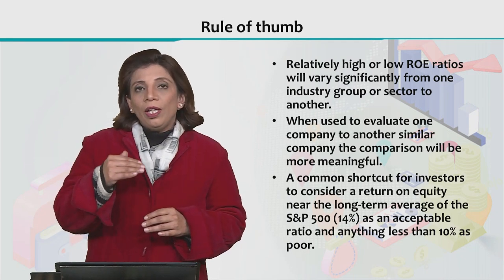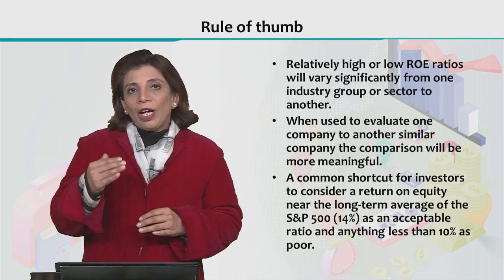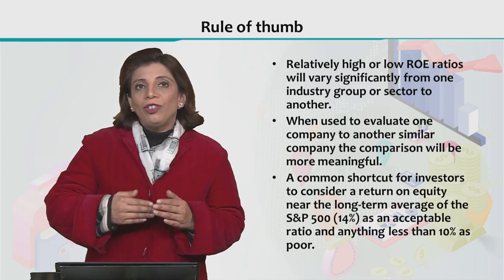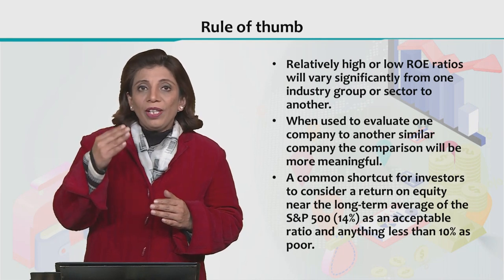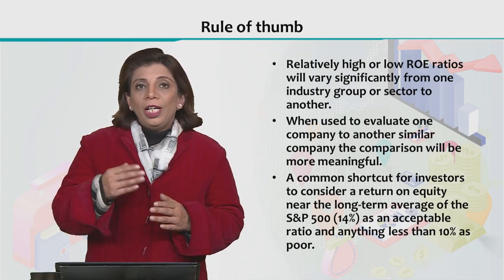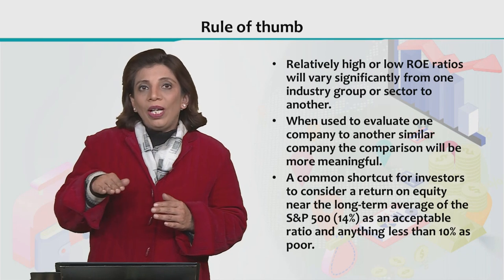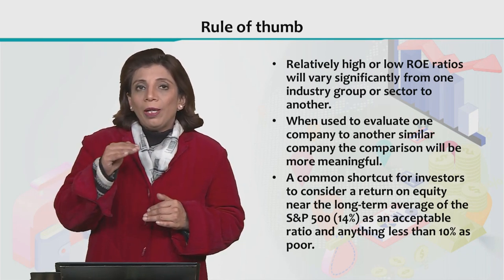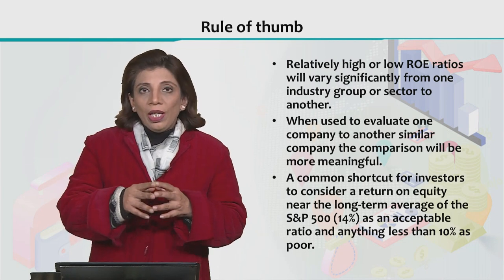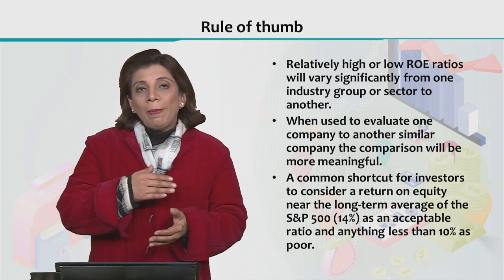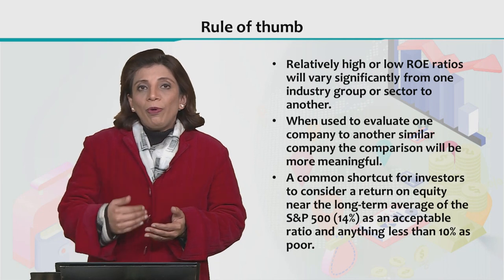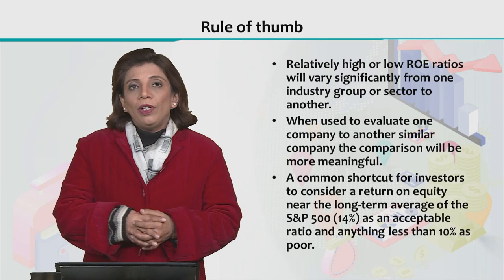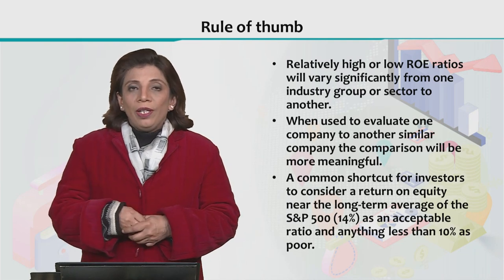If your company's ROE is above 14%, it means your company is showing excellent financial performance. But if it is lower than 14%, it means that on average, compared to global average performance, your company is underperforming. This is how we assess and compare the financial performance of a company by considering return on equity values.